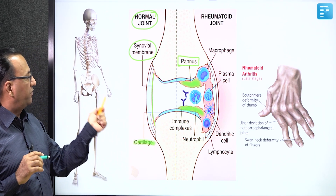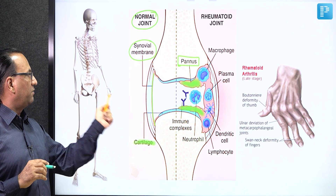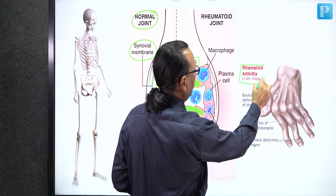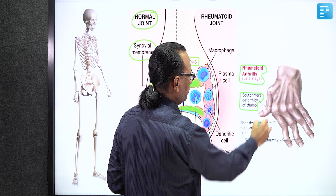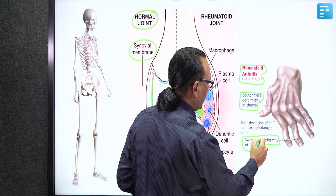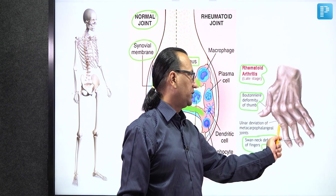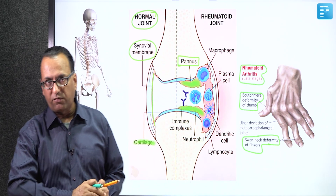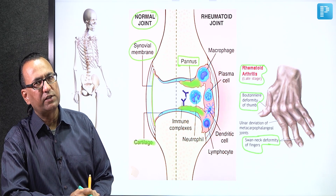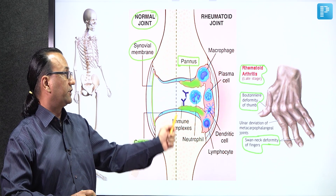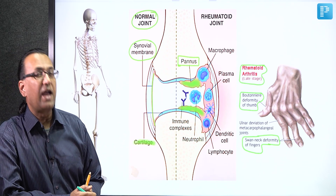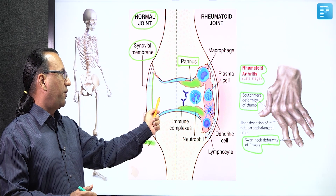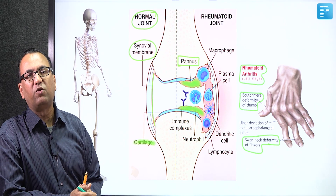Rheumatoid arthritis predominantly affects females with bilateral involvement, morning stiffness, soft tissue swelling, and later deformities like boutonniere deformity or swan neck deformity. The metacarpophalangeal and proximal interphalangeal joints are usually involved, while distal interphalangeal joints are typically spared. In osteoarthritis, seen with aging, distal interphalangeal joints can be involved, and there will also be degeneration of articular cartilage with type 2 collagen sediments in the synovial fluid.